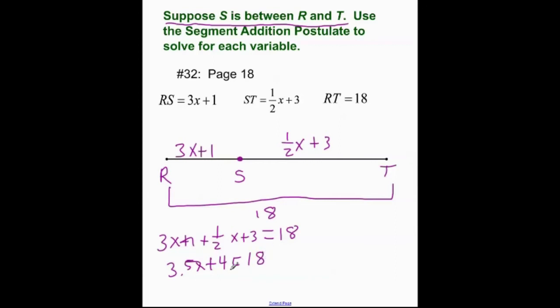My pen does bleed over sometimes so I'm still getting used to this thing. So, get rid of the 4 so that gives me, we subtract 4 on both sides. Subtract 4. Subtract 4. I'll go ahead and work over here. That gives me 3.5x is equal to 14.